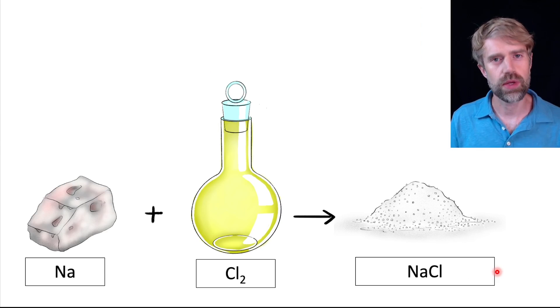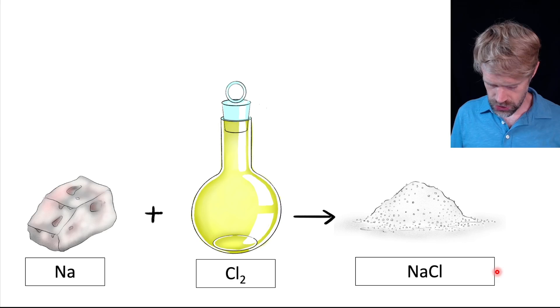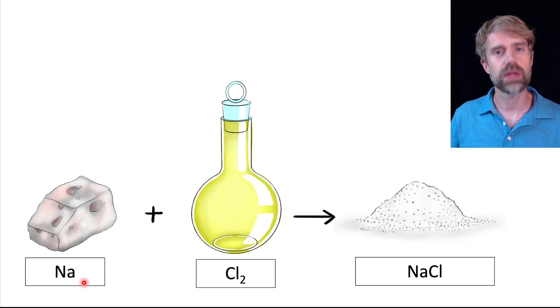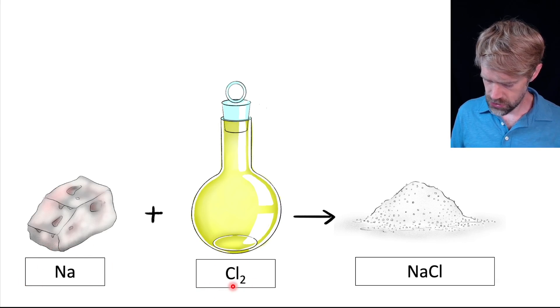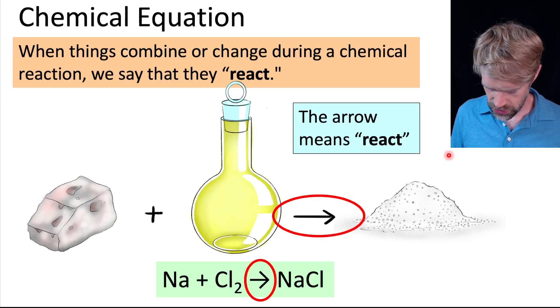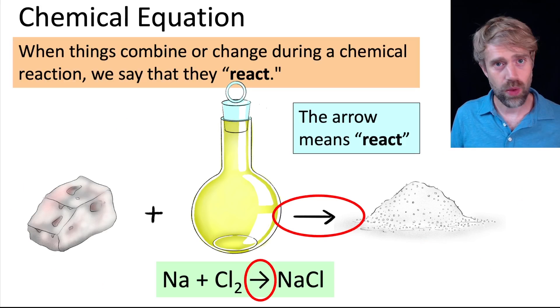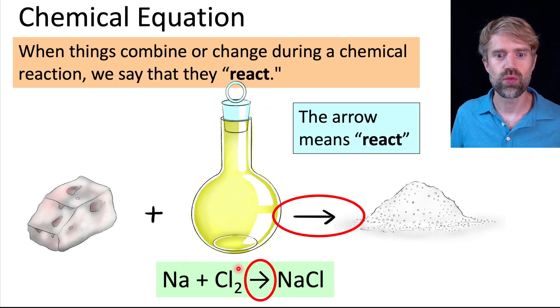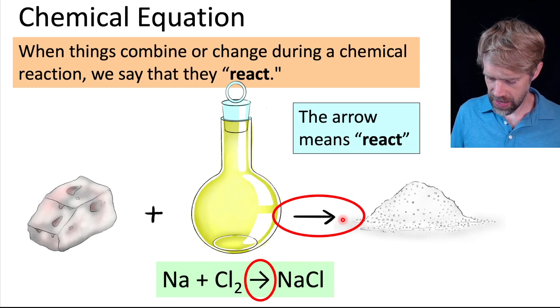Chemical reactions are usually written using symbols and formulas. So, for instance, sodium is Na and chlorine gas is Cl2. Sodium chloride is NaCl. We can write this reaction as a chemical equation. And we get Na plus Cl2 reacts to form NaCl. And this arrow here, this arrow means react. So, Na plus Cl2 react to form NaCl.